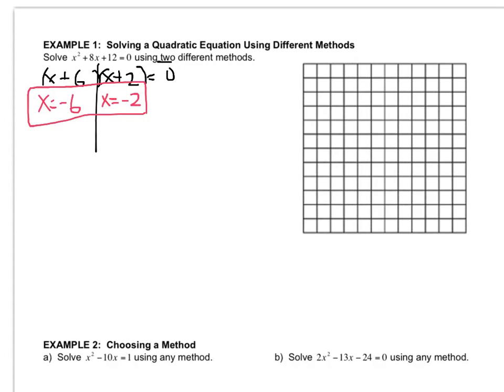So in order to graph it, I need to know where the vertex is. So I'll use my vertex formula, negative b over 2a. So that's negative 8 over 2 times 1. So the vertex is at x equals negative 4.